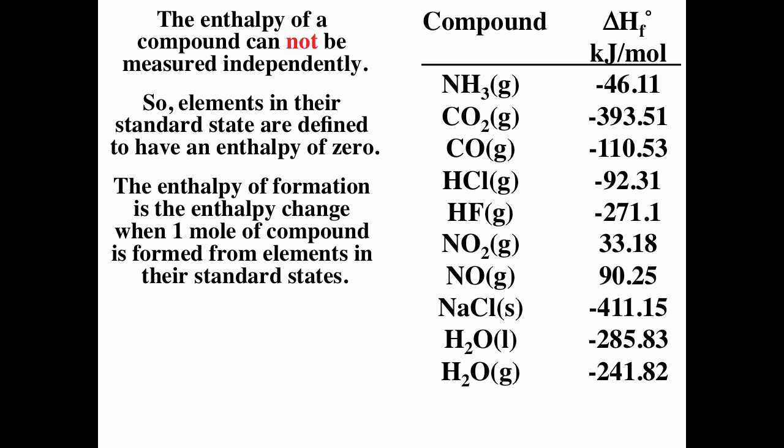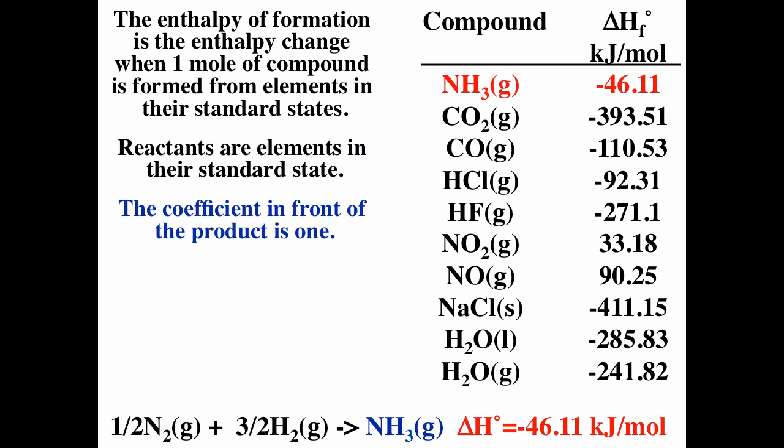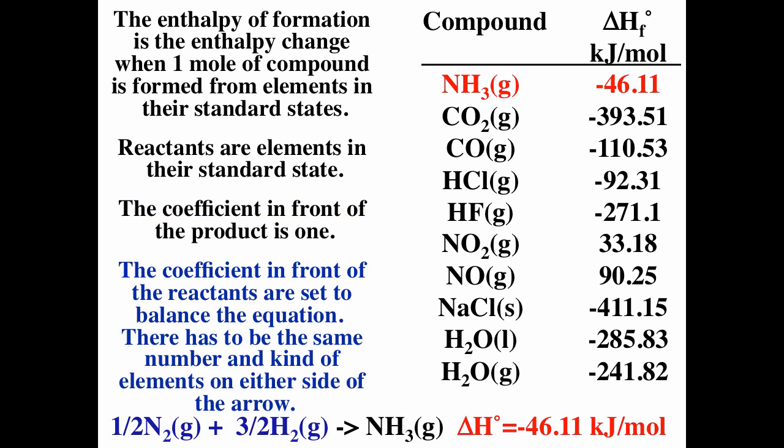To determine the enthalpy of formation for ammonia, we write a reaction going from elements in their standard state to one mole of that compound. The enthalpy of formation is the change in enthalpy for a reaction forming one mole of the compound. For nitrogen plus hydrogen forming ammonia, we measure that it's exothermic, producing 46.11 kilojoules of heat transferred from the system to the surroundings per mole of ammonia formed. We use one-half N2 and three-halves H2 to balance the reaction with one mole of product.